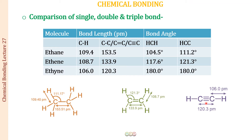Similarly, we can explain the C-H bond lengths: the carbon in ethyne is SP hybridized (shortest hybrid orbital) while carbon in ethane is SP3 hybridized (longest hybrid orbital). Therefore, the C-H bond in ethyne is the shortest among these three molecules. This clearly explains the decrease in both C-H and C-C bond lengths across single, double, and triple bonds.